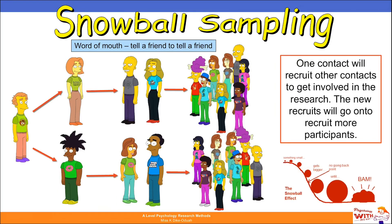Then we have snowball sampling. This is where one contact recruits other contacts to get involved in the research, and the new recruits go on to recruit more participants. You've got one individual who tells two friends, they go on and tell two other friends, and they tell more people. Snowball sampling uses word of mouth from participants as your resource for reaching out and recruiting more participants.